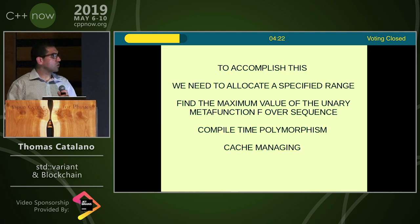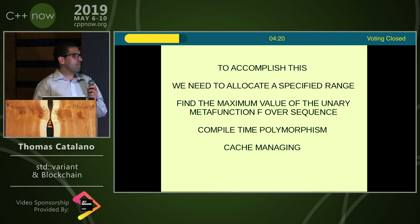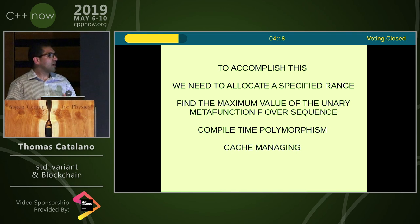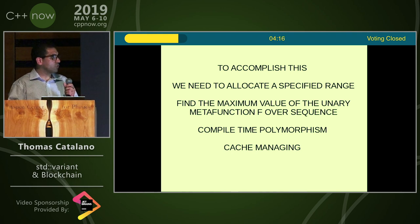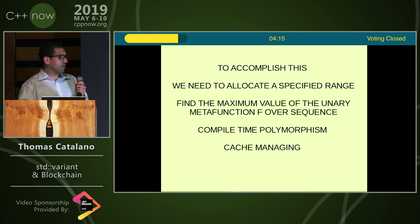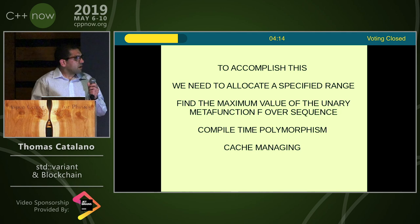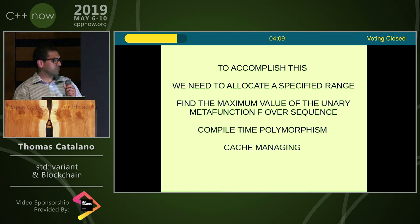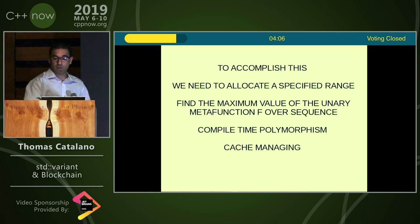To accomplish this, we need to allocate a specified range and find the maximum value of unary metafunctions over a sequence. Compile-time polymorphism and cache managing are the most important aspects.